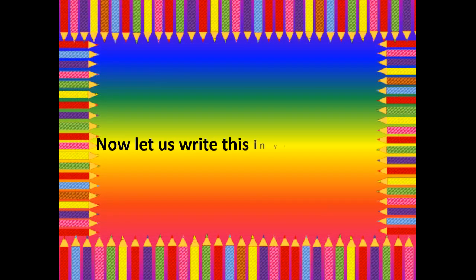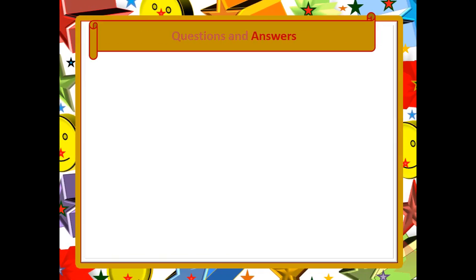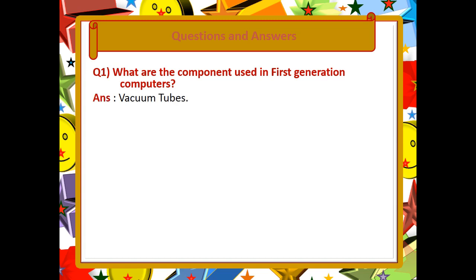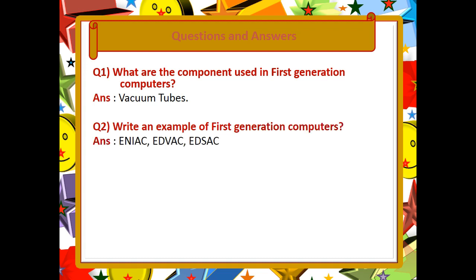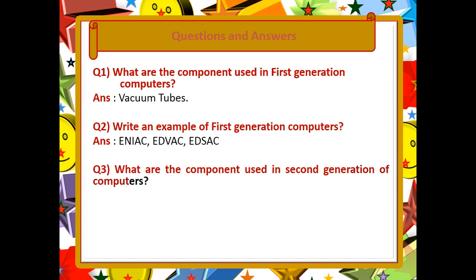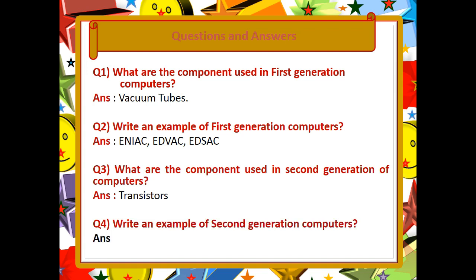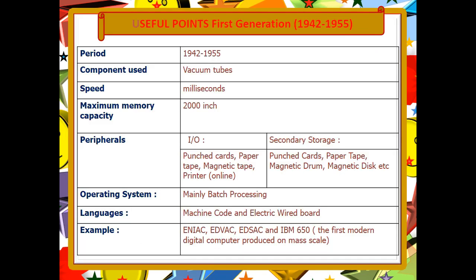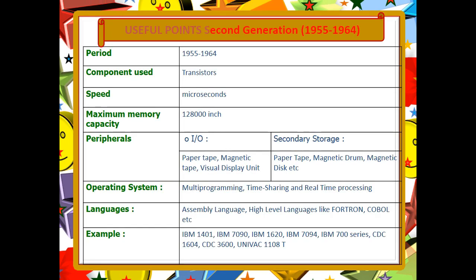Now let us write questions and answers in your notebook. Question 1: What are the components used in first generation computers? Answer: Vacuum tubes. Question 2: Write an example of first generation computers. Answer: ENIAC, EDVAC, EDSAC. Question 3: What are the components used in second generation computers? Answer: Transistors. Question 4: Write an example of second generation computers. Answer: IBM 1401. Now write these useful points in your notebook. Thank you, children.